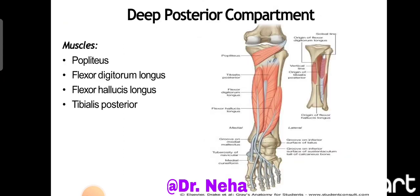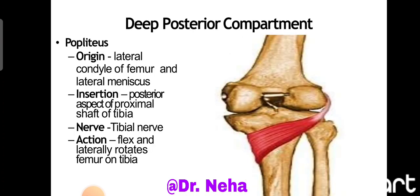In the deeper compartments we have the popliteus, flexor digitorum longus, flexor hallucis longus, and tibialis posterior. The popliteus arises from the lateral surface of the lateral femoral condyle and the lateral meniscus. It is inserted on the posterior aspect of the proximal shaft of the tibia above the soleal line and is supplied by the tibial nerve. Its action is flexion and lateral rotation of the femur on the tibia — it is the unlocking muscle of the knee joint.